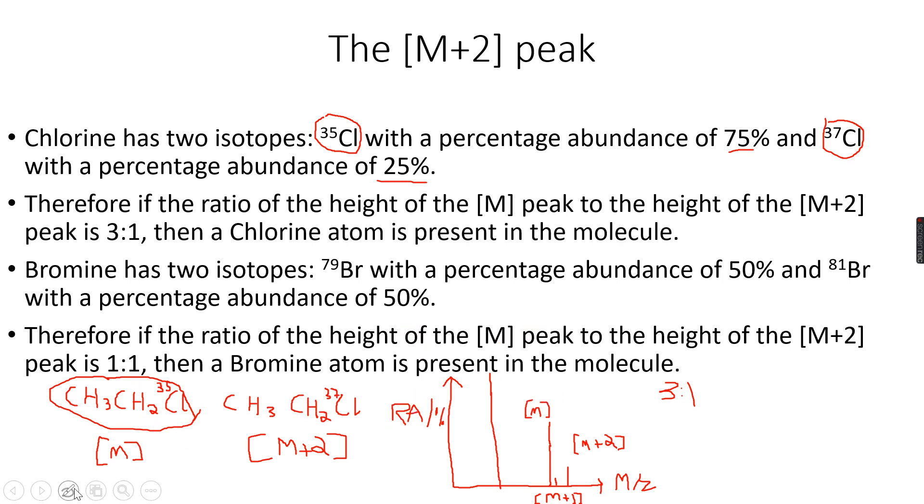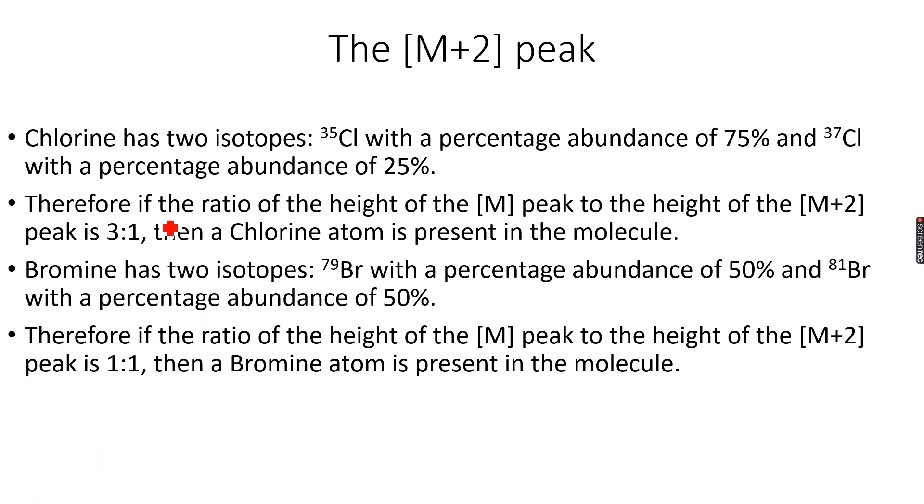Now let's do it for bromine. My two isotopes of bromine are Br-79 and Br-81. You need to learn Cl-35 and Cl-37, Br-79 and Br-81. The difference between these two isotopes is two atomic mass units again.